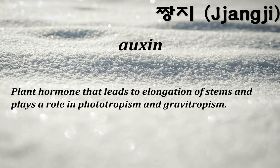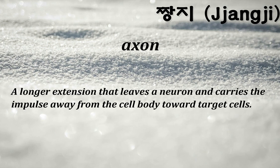Auxin: a plant hormone that leads to elongation of stems and plays a role in phototropism and gravitropism. Axon: a longer extension that leaves a neuron and carries the impulse away from the cell body toward target cells.